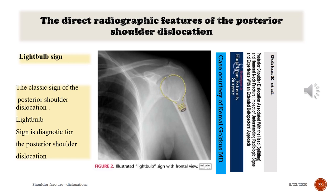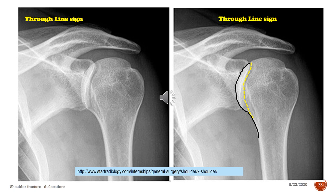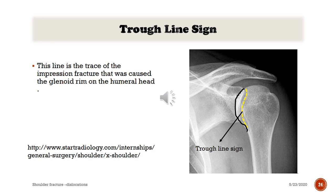Here is a case from the presenter's archive and publication. Another classic sign of posterior shoulder dislocation with head splitting is the trough line sign. This line is a trace of the impression fracture caused by the glenoid rim on the humeral head.